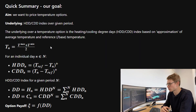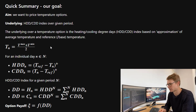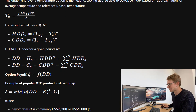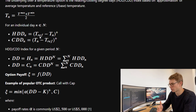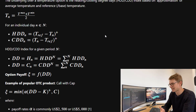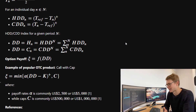A quick summary of our goal for this series: to price temperature options. The underlying here is the heating degree days and cooling degree days index over a given period. These HDD and CDD indexes are based on the approximation of average temperature, which in many places is just the average between the observed maximum and minimum temperatures throughout the day. For an individual day, HDD is the maximum of 0 between the reference base temperature minus this average temperature. For cooling degree days it's just the opposite. The HDD and CDD index for a given period n — for example the winter or summer period — is just the summation of all those daily HDDs and CDDs.